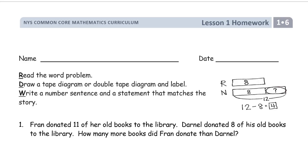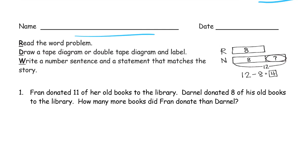Welcome to the homework for lesson 1. This is module 6 of first grade. Write your name here first. We're working on word problems and our process for solving them is always: read it first, draw a tape diagram or a double tape diagram — here's an example of one right here — and label it, then write a number sentence and a statement that matches the story.